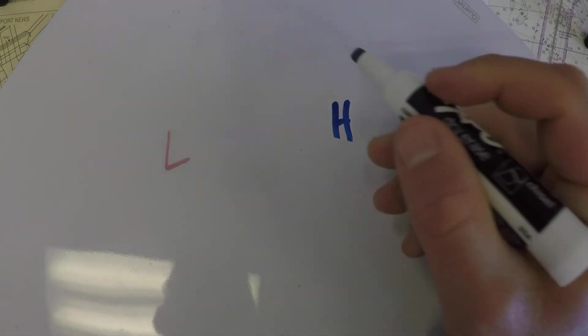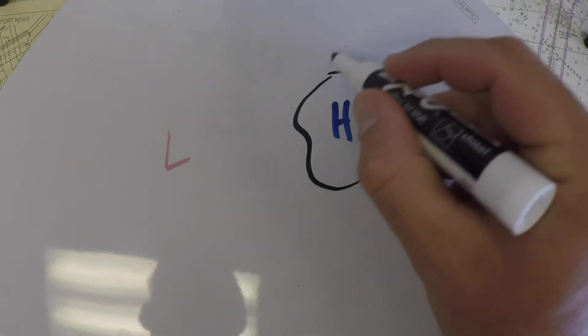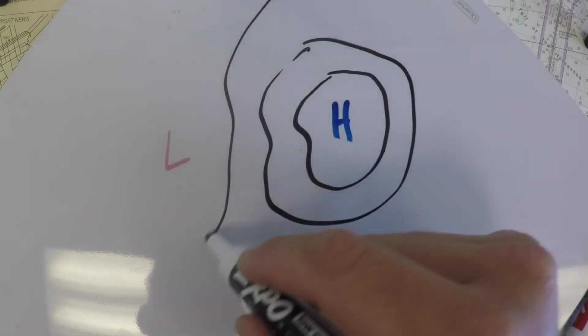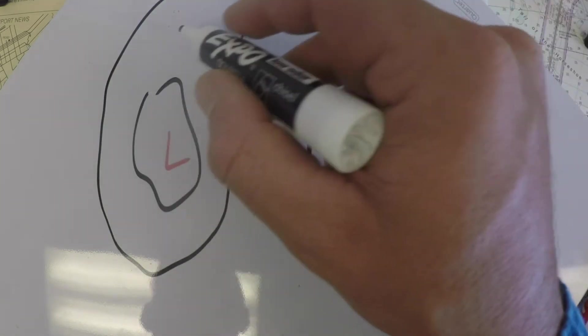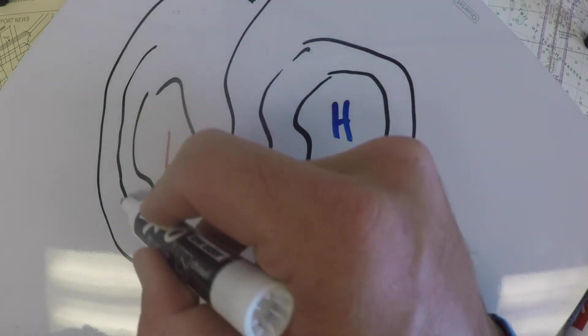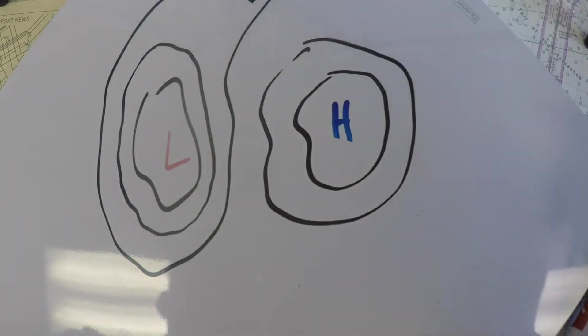So if you were to draw a low pressure system and a high pressure system on there, air wants to generally move between areas from high pressure to low pressure. And you may be familiar with seeing these kind of gradient lines on a weather chart.